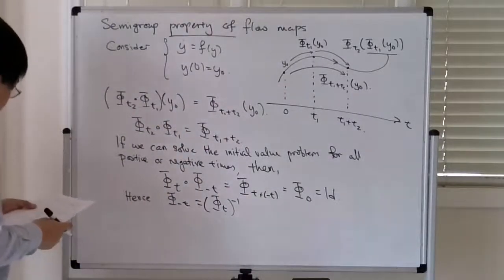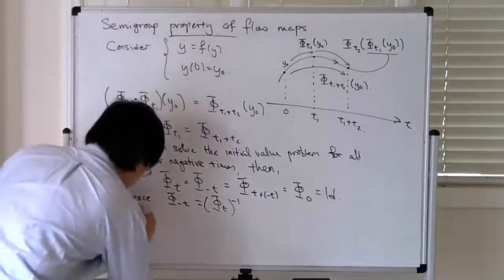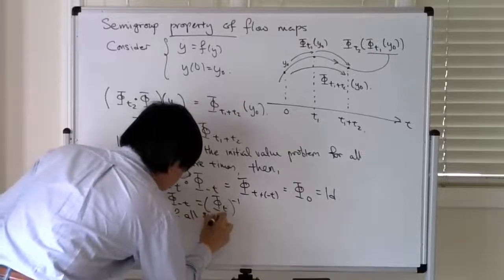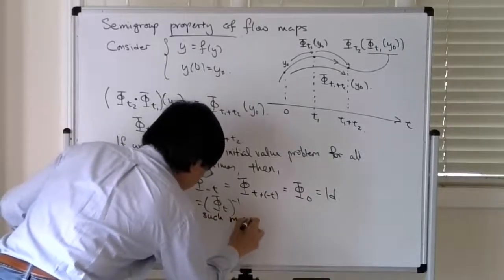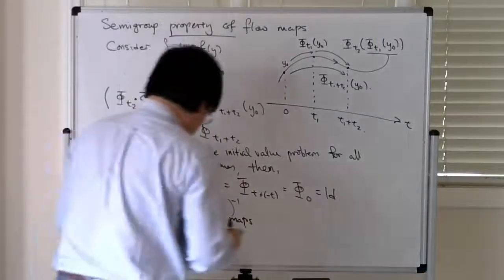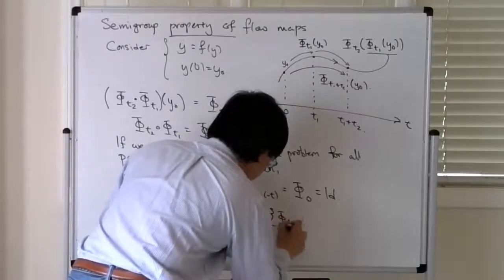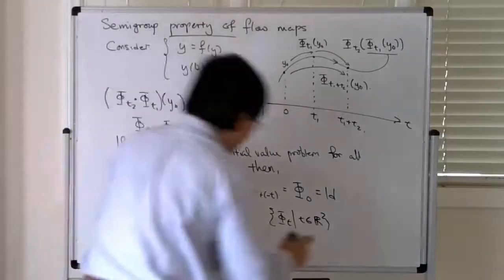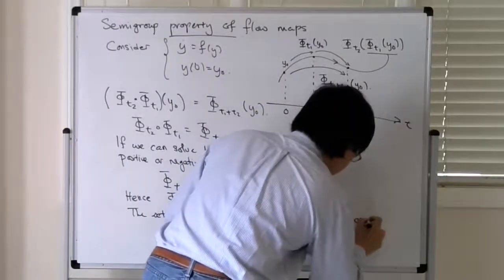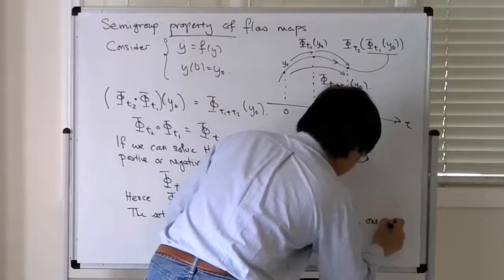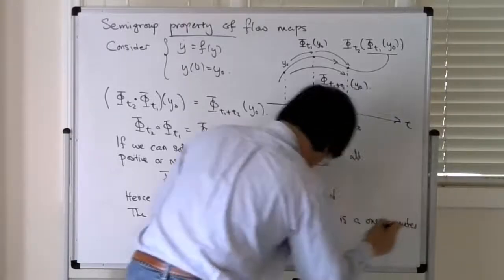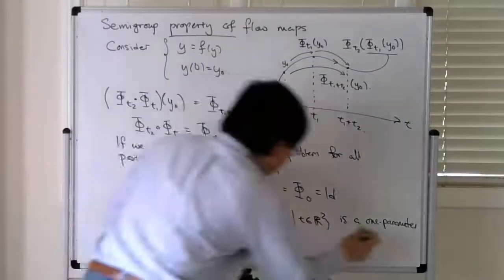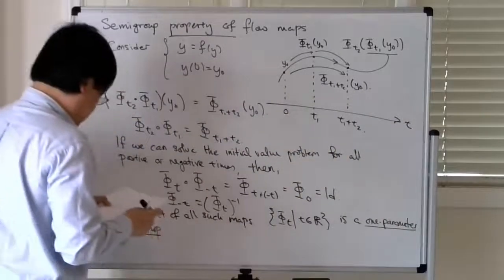Then the set of all such maps, Φ_t for t in the reals, is a one-parameter group.